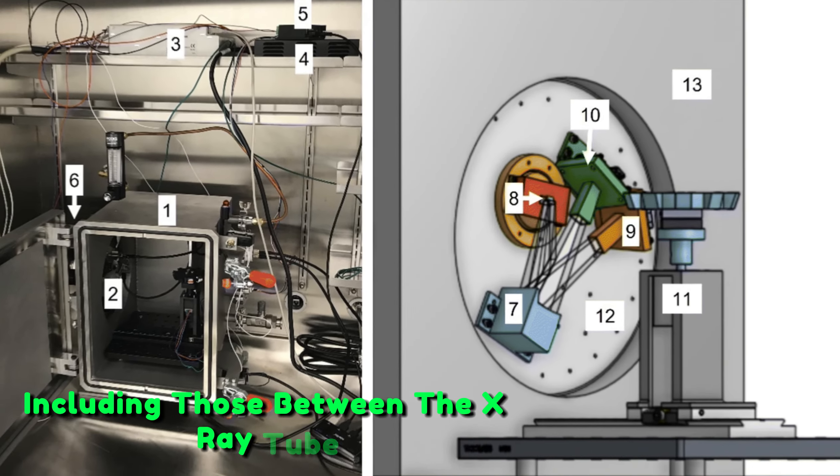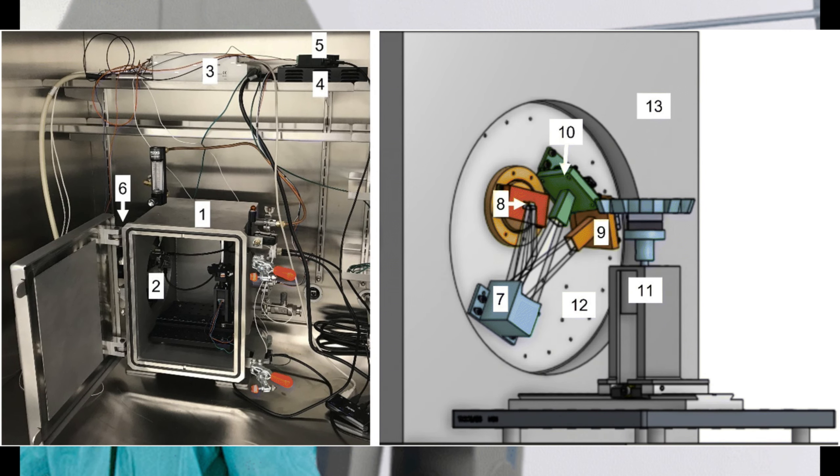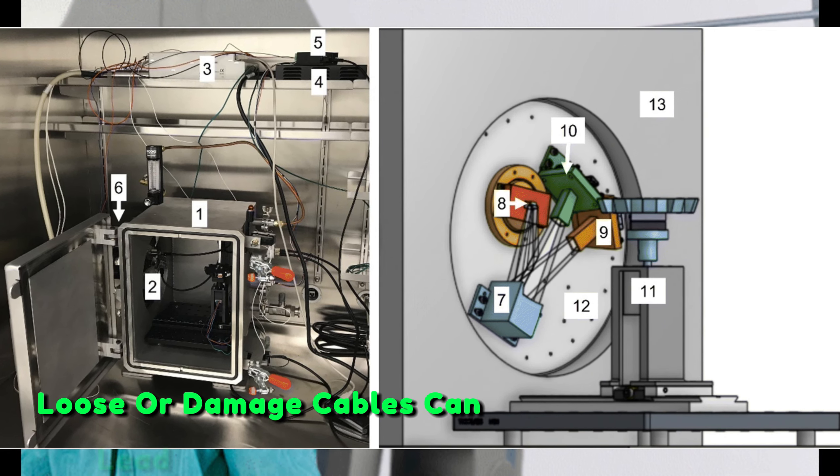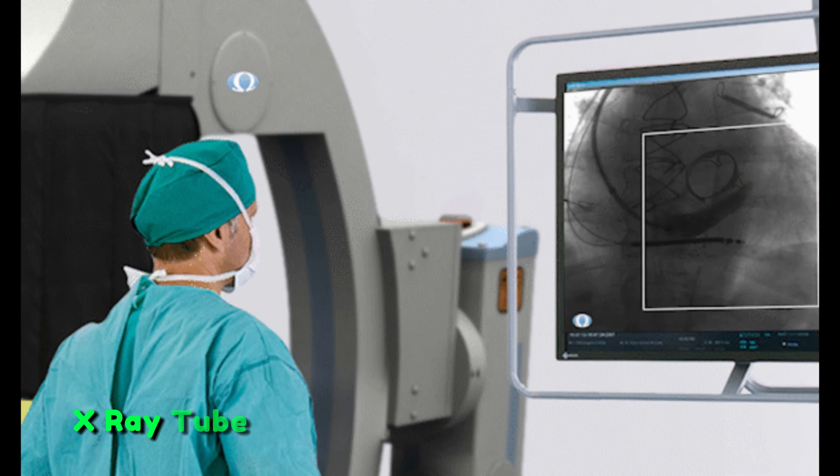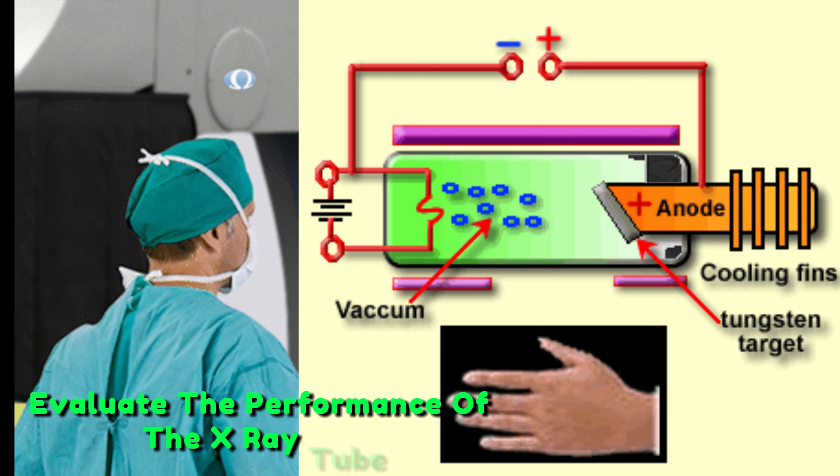Cabling and connections. Inspect all cables and connections, including those between the x-ray tube, control panel, and image receptor. Loose or damaged cables can lead to malfunctions and image artifacts.